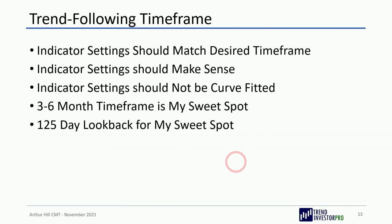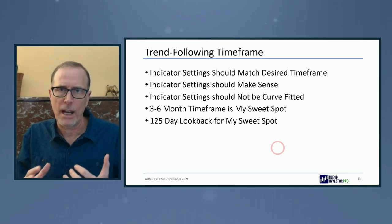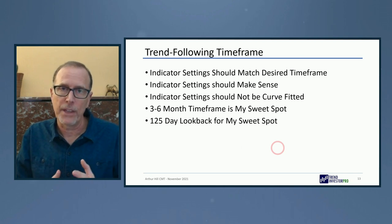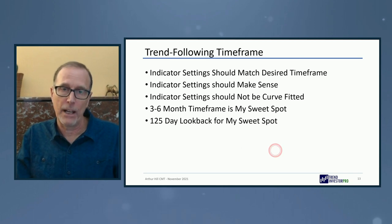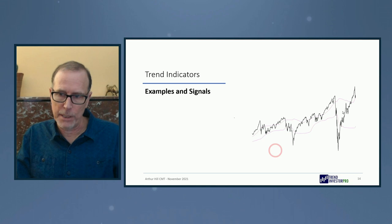Make sure your indicator settings match your desired time frame and make logical sense — I don't want to capture a six-month trend with a 35-day indicator. Try not to curve-fit your indicators; 98 days doesn't make sense, just use 100. Three to six months is my personal sweet spot. The way markets have moved, trends seem to take shape more quickly — look at the COVID crash and recovery. Things happen fast, and that's why I like that three-to-six month time frame with the 125-day lookback.